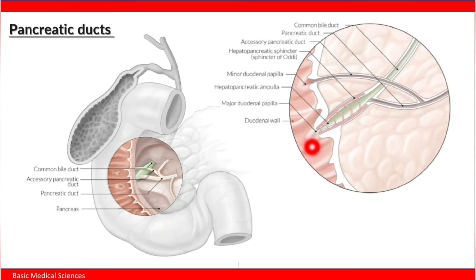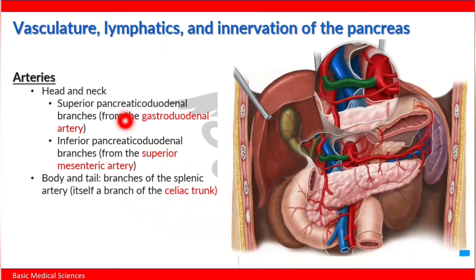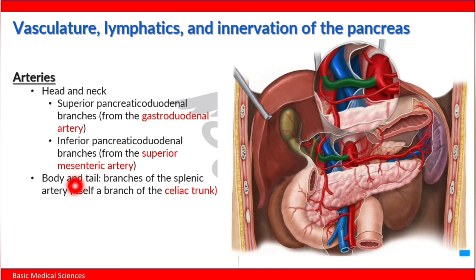The vasculature of the pancreas: the head and neck are supplied by the anterior and posterior superior pancreaticoduodenal branches from the gastroduodenal artery, and the inferior pancreaticoduodenal branches from the superior mesenteric artery. The body and tail are supplied by branches of the splenic artery, which is a branch of the celiac trunk.